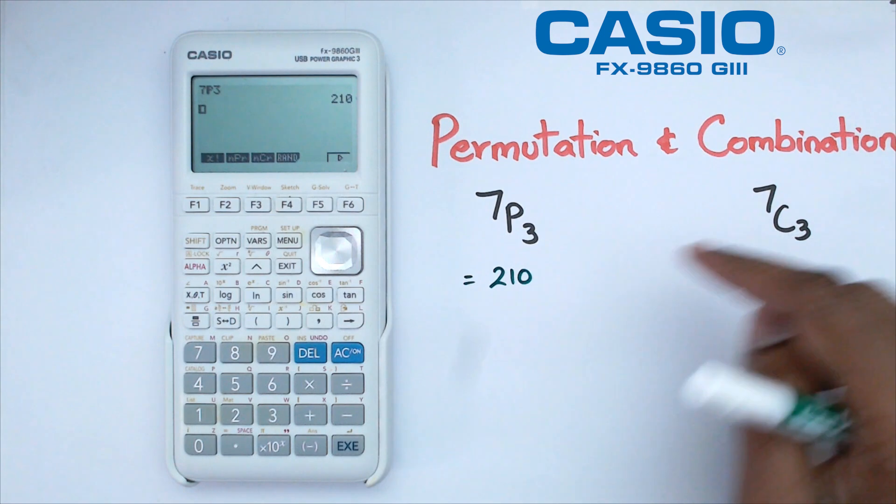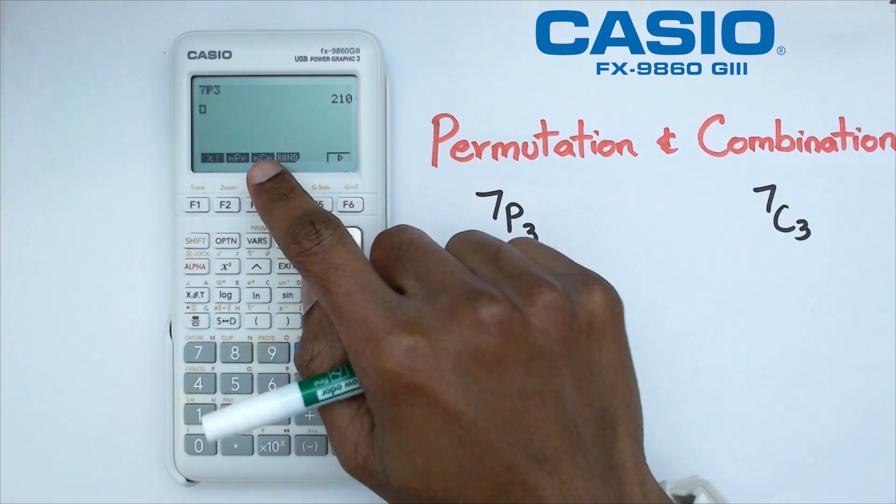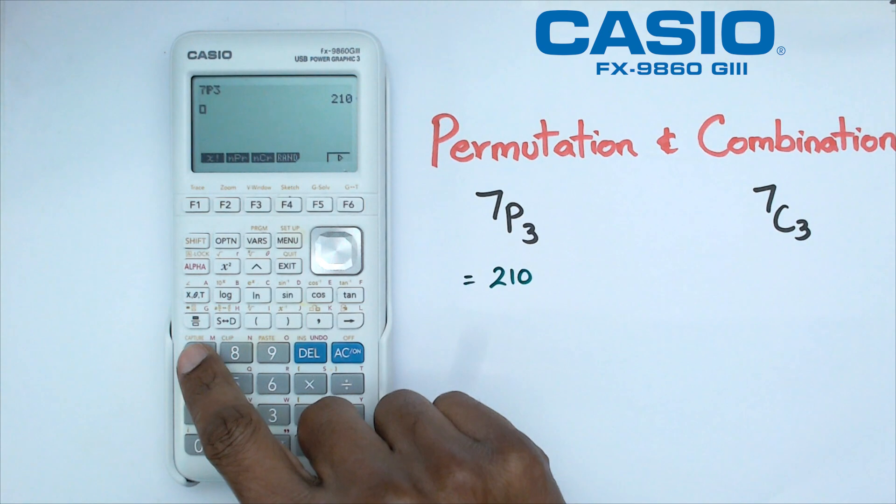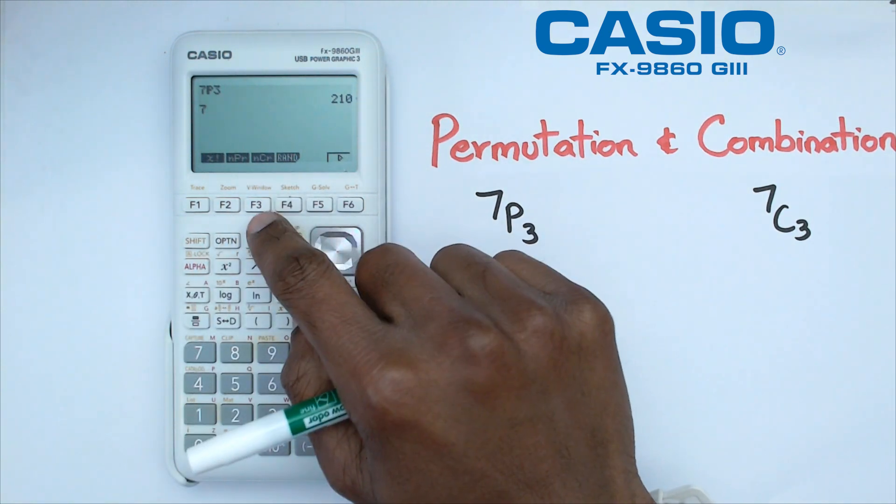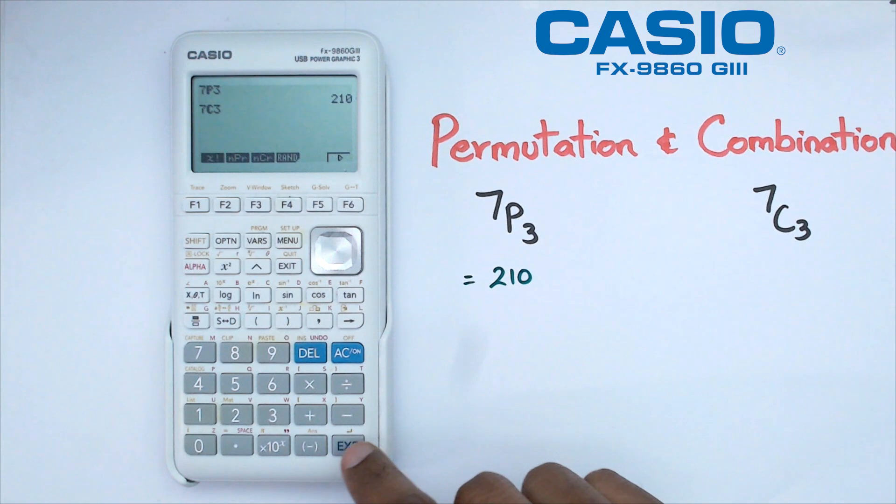And now we're going to try and do 7C3. So we pretty much follow the same steps, but instead of pressing F2, we're going to press F3. So if I do 7 and F3, which is NCR, so 7C3, that's going to give me an answer of 35.